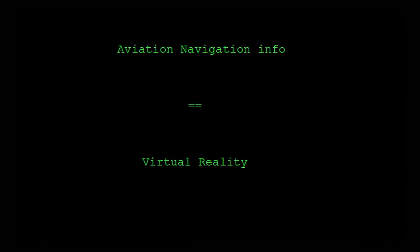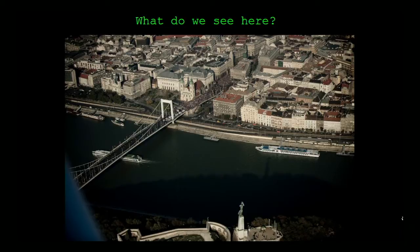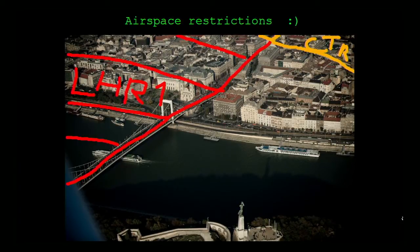First let's talk a little bit about aviation navigation information and what this is really about. What you'd see in a photo of Budapest is a bridge, a river, it's kind of scenic. But actually what an aviator would see is something you don't see - this red part is restricted airspace, you're not allowed to fly there, and there's control airspace for the Budapest main airport, which means you only fly there if you have permission.